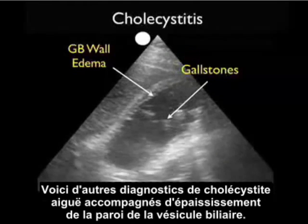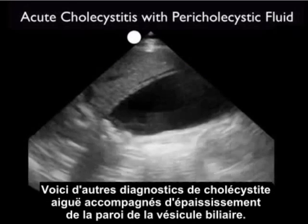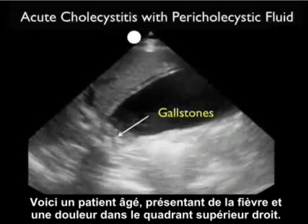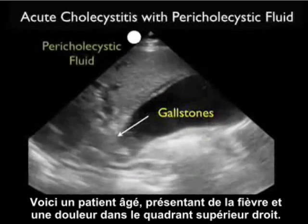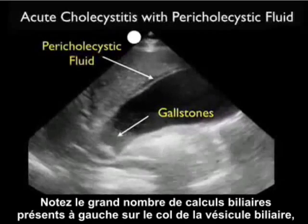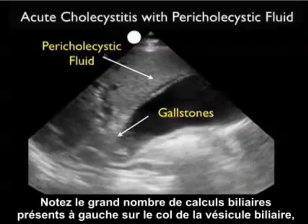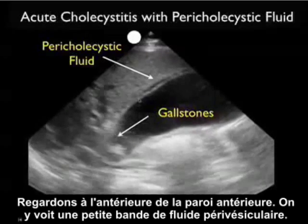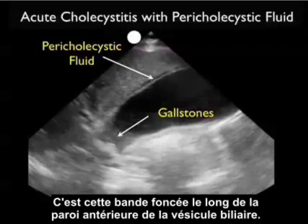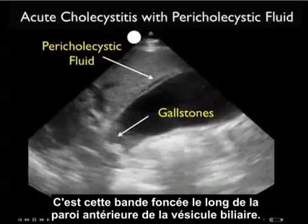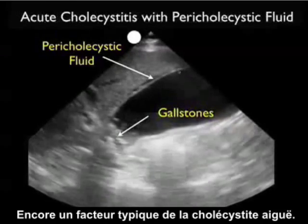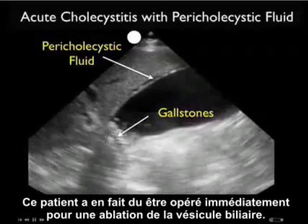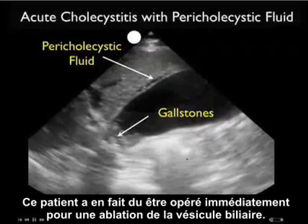Some of the other findings of acute cholecystitis in addition to a thickened gallbladder wall: here's an elderly patient presenting with fever and right upper quadrant pain. Notice the significant burden of gallstones down by the neck of the gallbladder to the left. Looking anterior to the anterior wall, we see a small stripe of pericholecystic fluid — that dark stripe outlining the anterior wall of the gallbladder. This is another signature finding in acute cholecystitis, and in fact this patient had to go directly to the operating room for removal of the gallbladder.